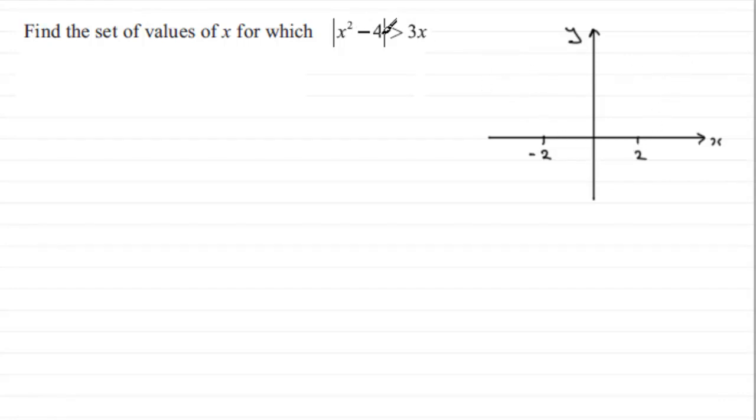But because we've got a modulus around it then all these negative values for y would become positive. So what we get is a reflection of the bottom part of the parabola in the x axis. So you're going to get a graph that looks something like this. Coming down here and then normally it would carry on underneath like so and then back up like this, meant to be symmetrical. But this part is reflected in the x axis. So this would be the graph then of y equals the modulus of x squared minus 4.